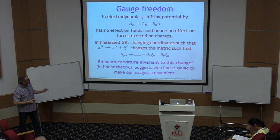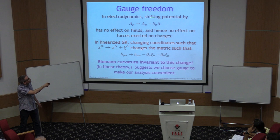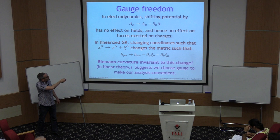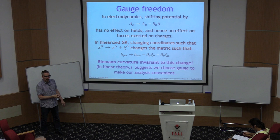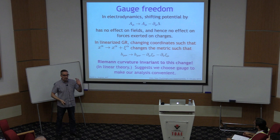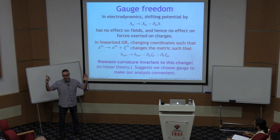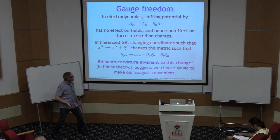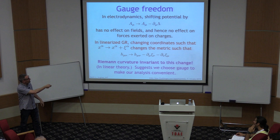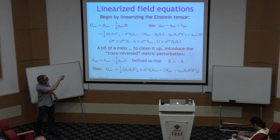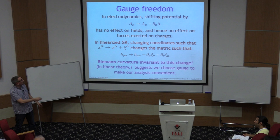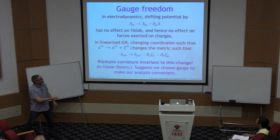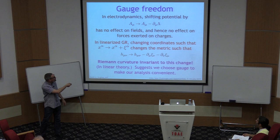In the same way we can shift potentials in electrodynamics, in linearized general relativity you can introduce an infinitesimal coordinate transformation. Imagine starting in some coordinate system x-alpha and changing all coordinates by a small generator xi-alpha. That changes your metric, but the Riemann curvature arising from it remains unchanged. It's just like a gauge transformation in electrodynamics: changing the potential has no effect on electric and magnetic fields, and changing coordinates affects the metric but leaves no impact on curvature.